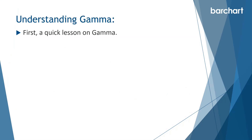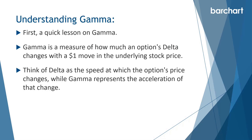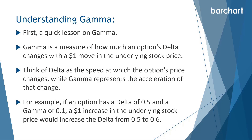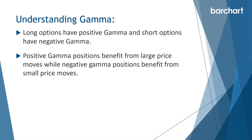First, a quick lesson on gamma. Gamma is a measure of how much an option's delta changes with a $1 move in the underlying stock price. Think of delta as the speed at which the option price changes, while gamma represents the acceleration of that change. For example, if an option has a delta of 0.5 and a gamma of 0.1, a $1 increase in the underlying stock price would increase the delta from 0.5 to 0.6. Long options always have positive gamma and short options have negative gamma. Positive gamma positions benefit from large price moves, while negative gamma positions benefit from small price moves.